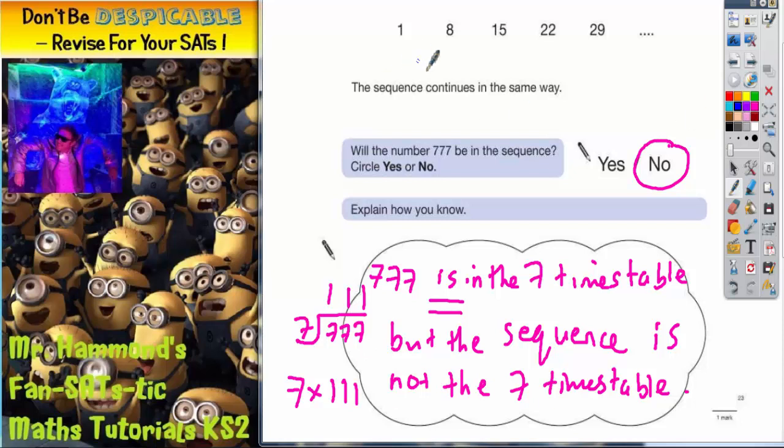If you want to add a little bit of extra detail, you could say the 7 times table goes 7, 14, 21, 28, 35. So just because these go up in 7s does not make them the 7 times table. Therefore, 777 will not be in the sequence.